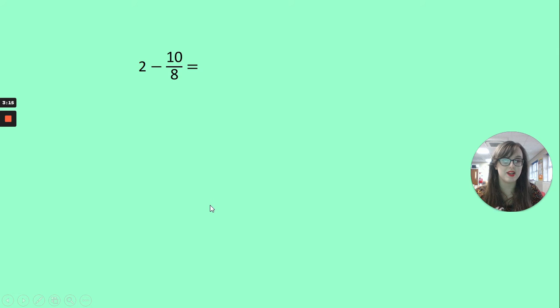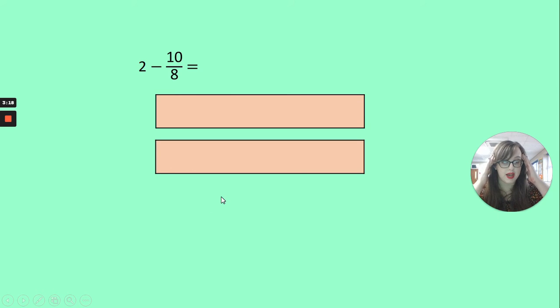So 2 holes take away 10 eighths. So here are our holes again. I'm imagining them in my head. If it helps you to draw them out, you can do. I would recommend not trying to rely on this too much, though. I want to subtract 10 eighths. So I need to split my holes into eighths. There we are. There's 8 eighths there.